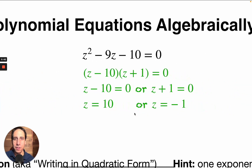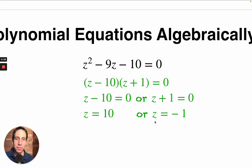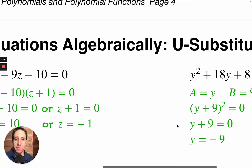Over here, what two numbers multiply up to negative 10 and also add up to negative 9? It's minus 10 and plus 1. So z minus 10 equals 0, or z plus 1 equals 0. So z could equal 10 or z could equal negative 1. You can write them in a solution set if you really want to.